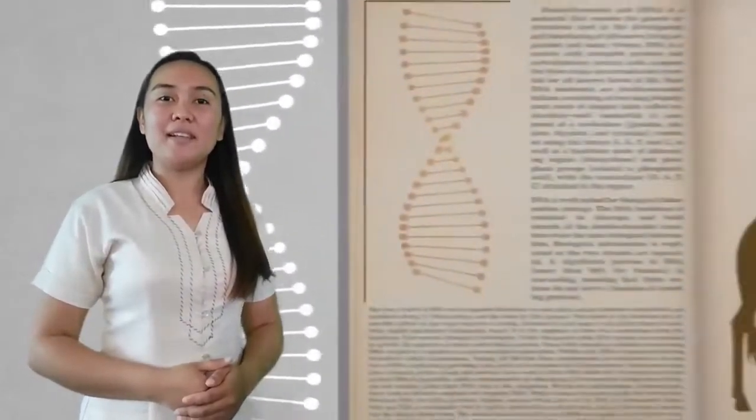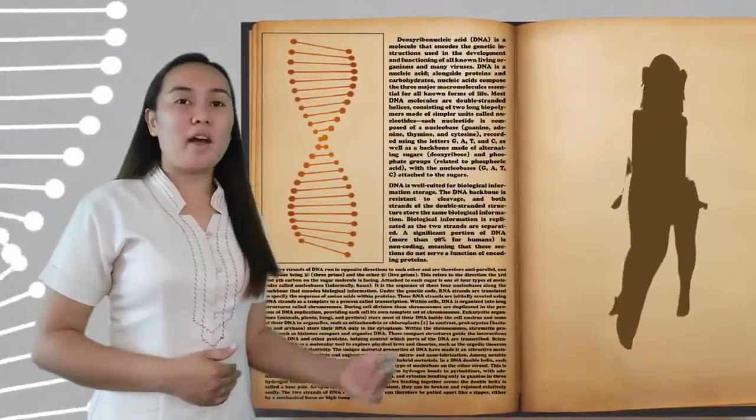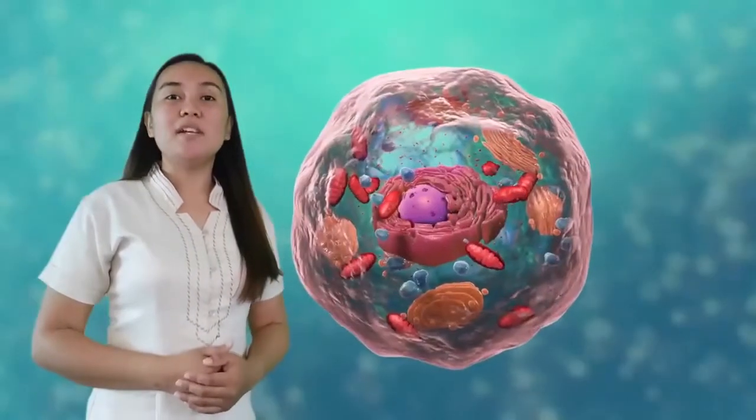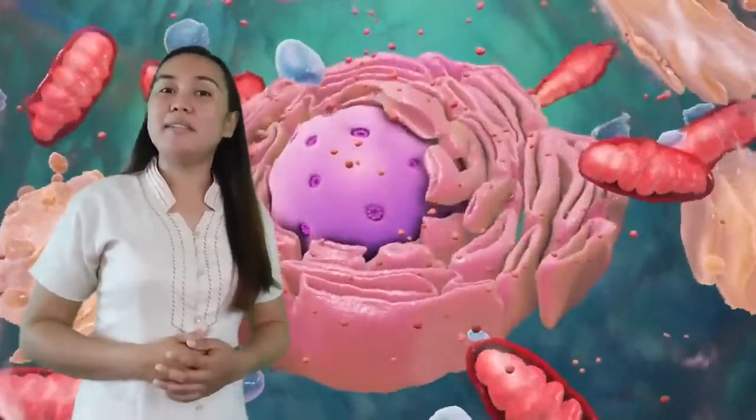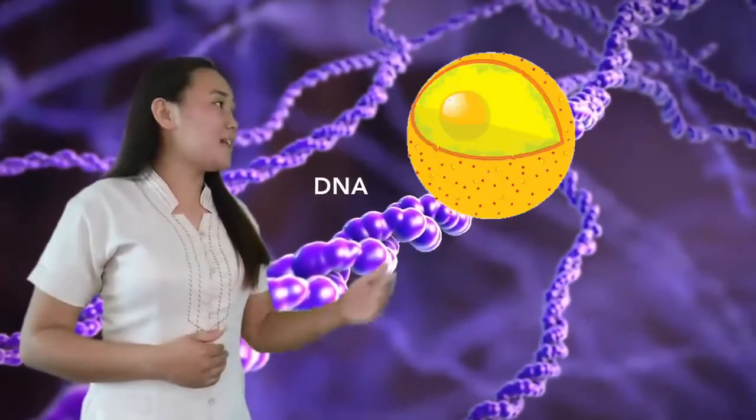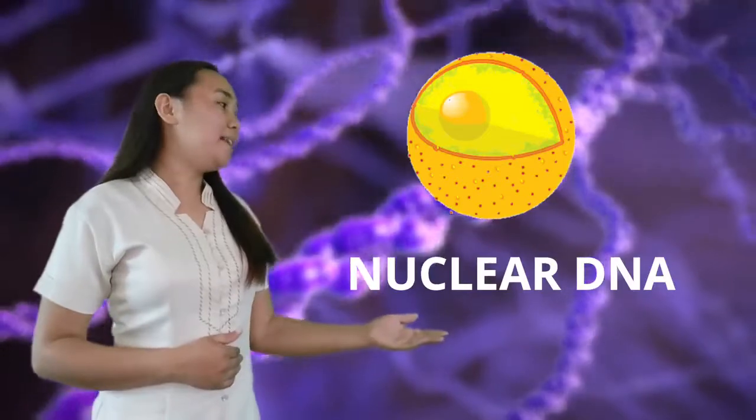Deoxyribonucleic acid is the hereditary material in humans and almost all other organisms. Nearly every cell in a person's body has the same DNA. Most DNA is located in the cell nucleus where it is called nuclear DNA.